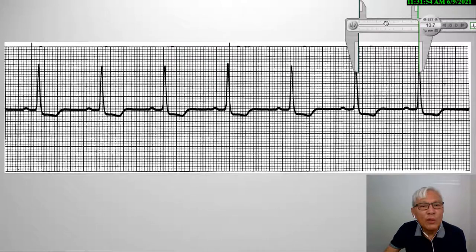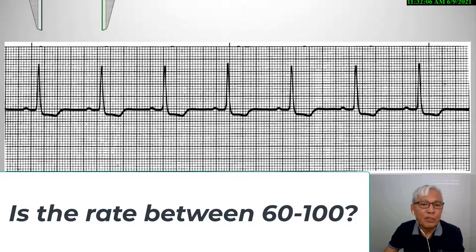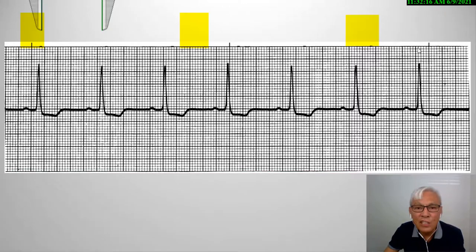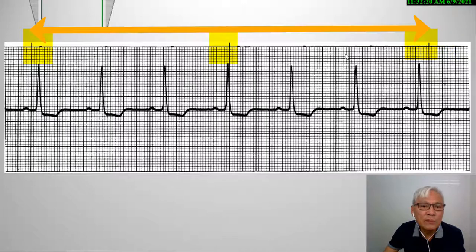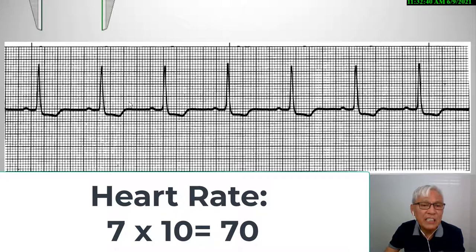The next step is to count or determine the rate. We're going to use the six-second method and take a look at the number of QRS complexes within a six-second mark. Notice these are the three-second marks, so taking two of them, we count seven QRS complexes within this six-second mark. We multiply that by 10, and therefore we get our heart rate at 70 beats per minute.